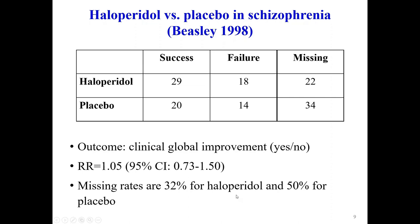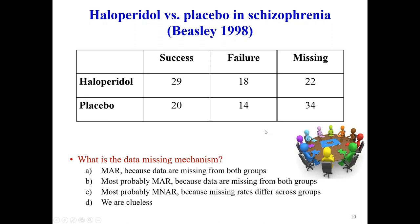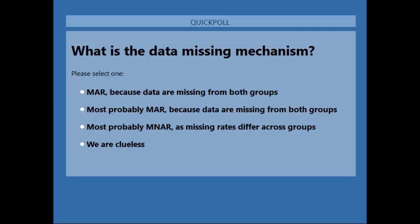We also have extra information: missing rates are 32% for haloperidol and 50% for placebo. The question is: what is the missing data mechanism? Four options: A — missing at random because data are missing from both groups; B — most probably MAR but uncertain; C — most probably MNAR because missing rates differ across groups; D — we are clueless. Please take half a minute to think about that.